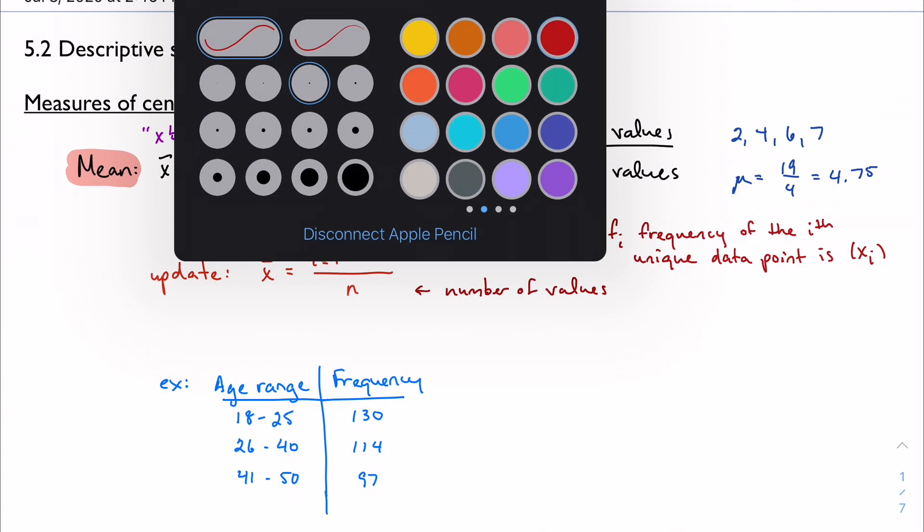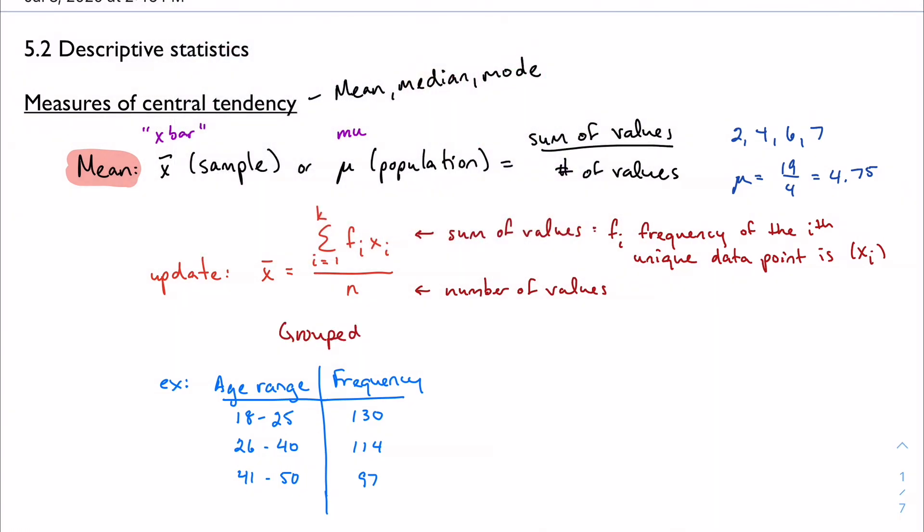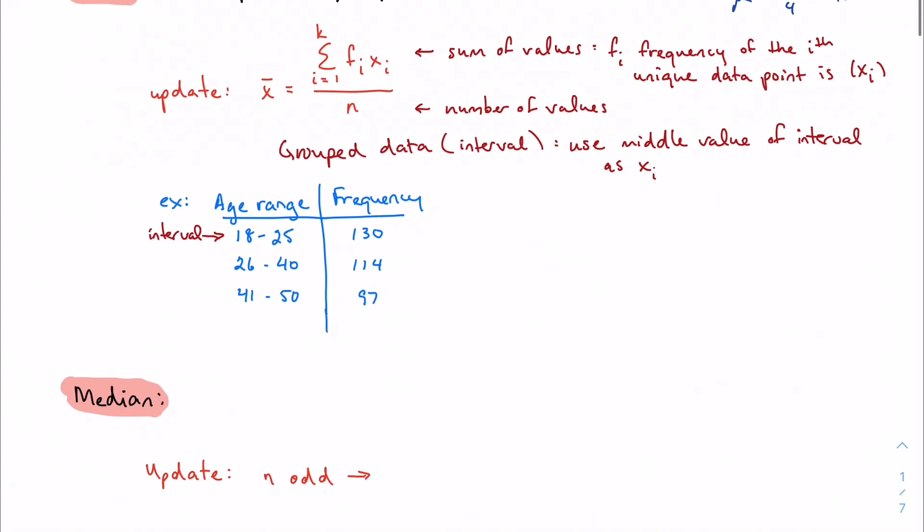More specifically, this f sub i is the frequency of whatever the i-th unique data point is. And that i-th unique data point is x sub i. If we're dealing with grouped data, so we're talking about some sort of interval, kind of like the example that you see below, this would be some kind of interval of data. All of the people that fall in this 18 to 25 age range. We're going to use the middle value of the interval for our x sub i, for our data value.